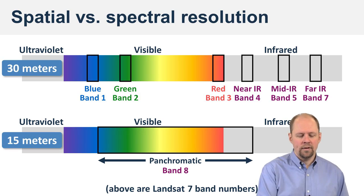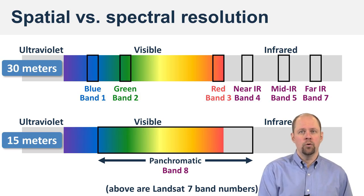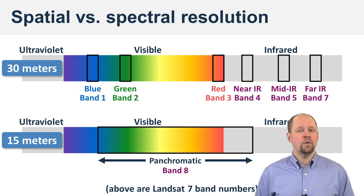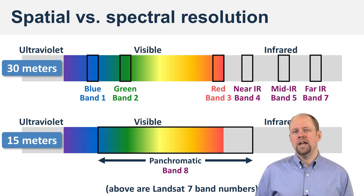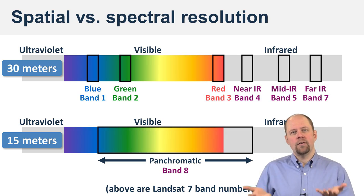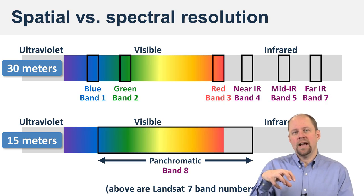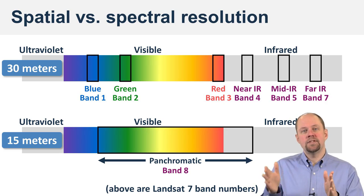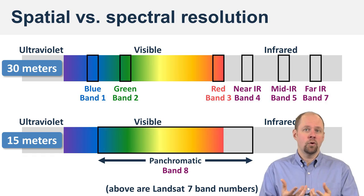The multispectral bands — blue, green, red, and so on — have a spatial resolution of 30 meters, while the panchromatic band has a spatial resolution of 15 meters. The relationship to see here is that if we have larger cells like 30 meters, there's more light reflected off that area because it's a larger area, so our sensor is able to detect it. We can then divide up the spectrum into narrower bands and still detect enough light for the sensor to record it.